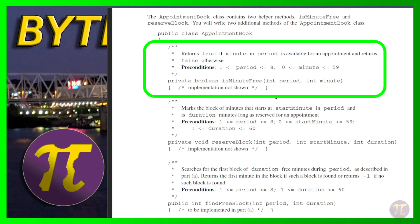The first method they give us is `isMinuteFree`. You provide a period and the particular minute within that period that you want to check to see if the teacher is free, and it'll return true or false. For all 60 minutes within a period, it'll select a particular minute and tell you true or false — yes, the teacher is free for that particular minute.